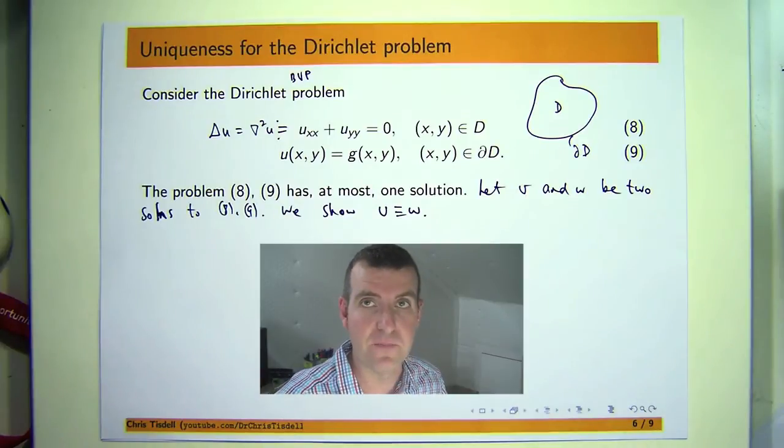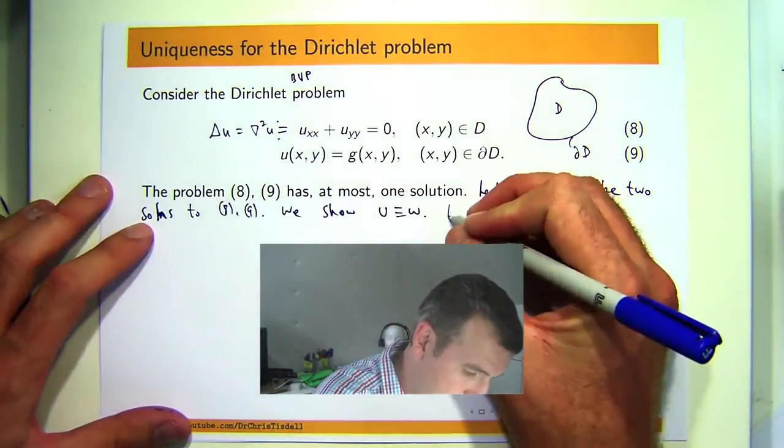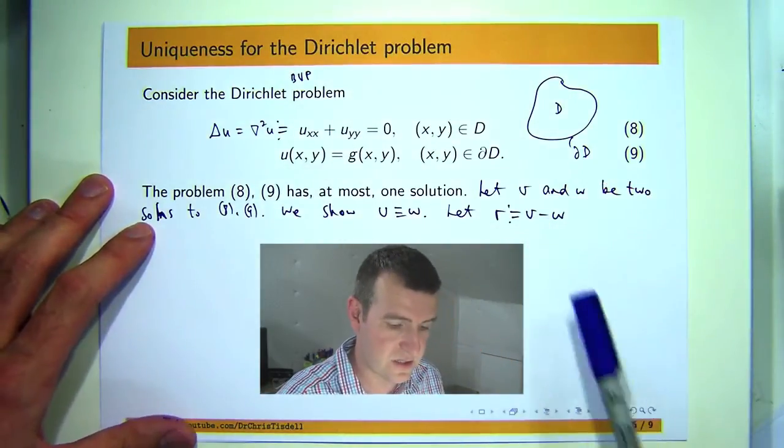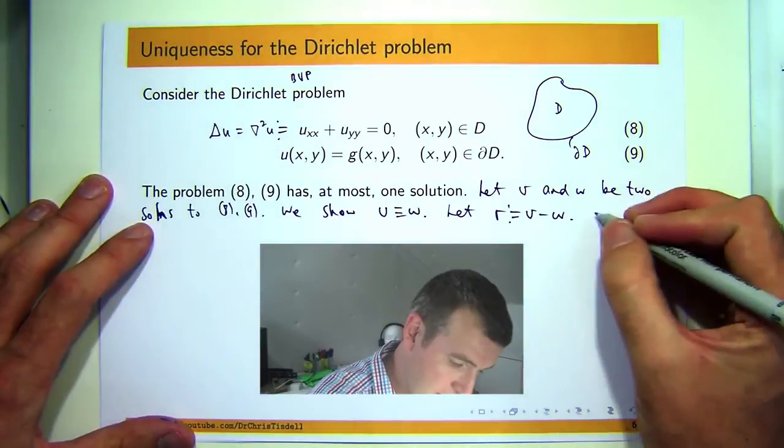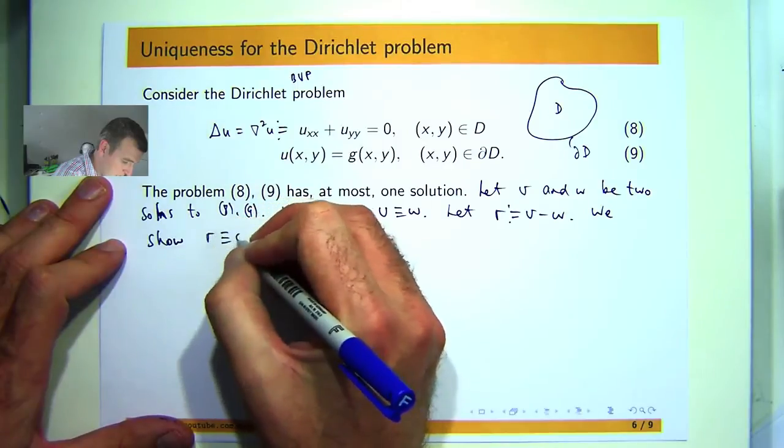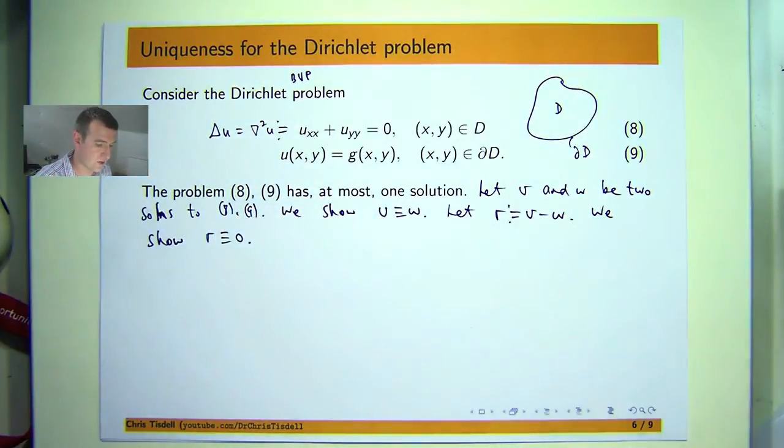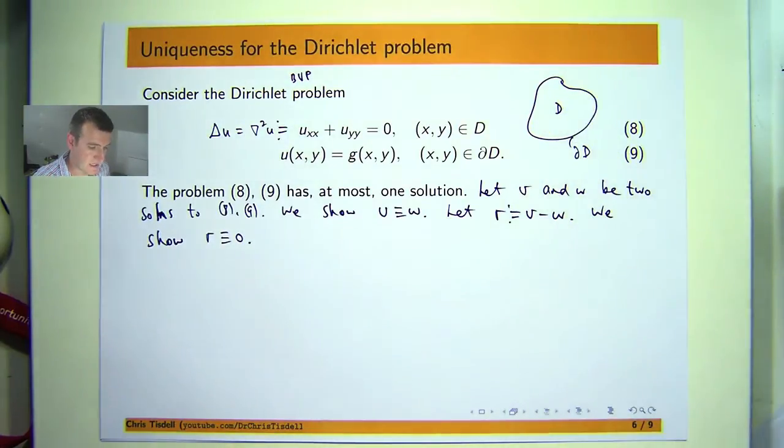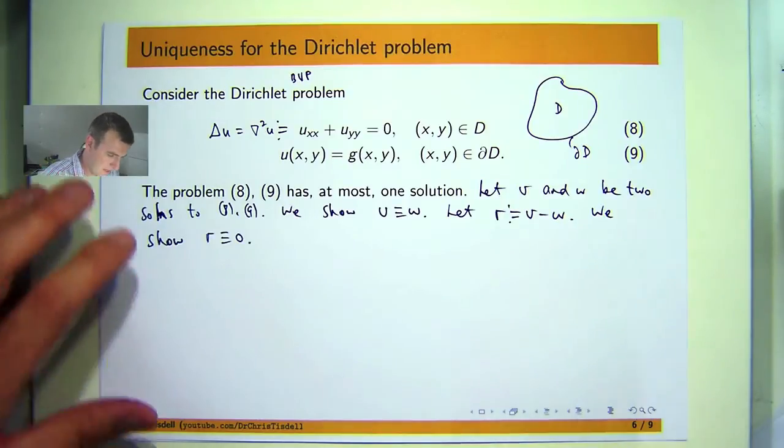So how do we do that? Well what we're going to do is look at the difference of these two solutions and show that the difference is identically equal to 0. So let's denote the difference of the two solutions V and W by R. So our aim has now slightly changed to show that R is identically equal to 0 on the region D or the union of D and the boundary of D.